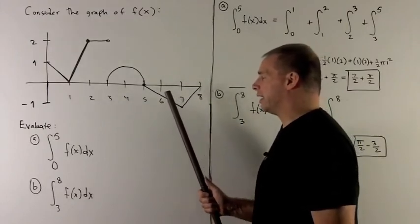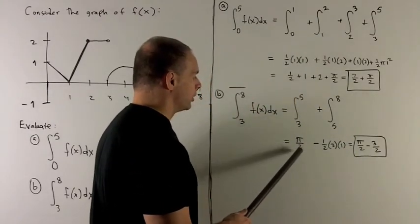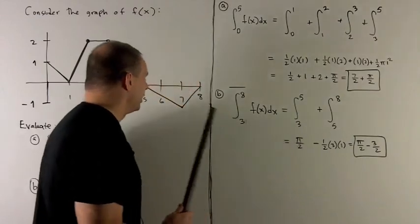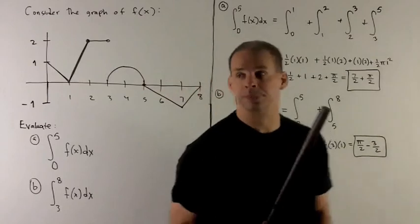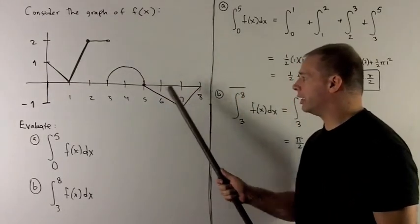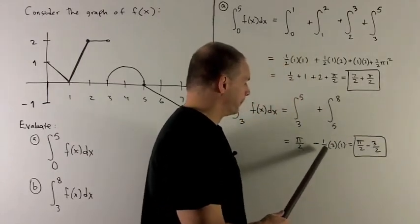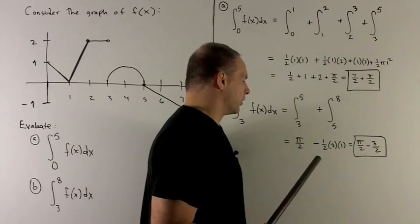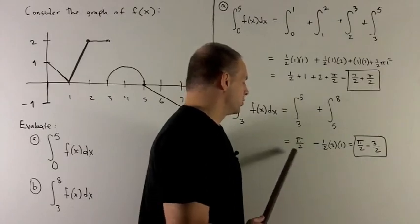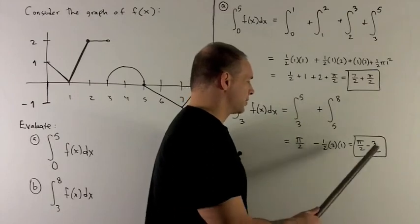We have the area of the semicircle, which we already saw is π/2. Here I have a triangle with height 1 and base 3, so the area is one-half base times height, which is one-half times 3 times 1. But we throw a minus sign in since we live under the x-axis. So the definite integral equals π/2 minus 3/2.